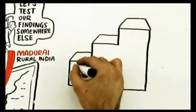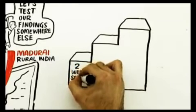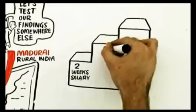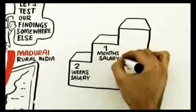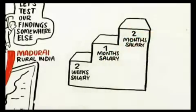They replicated the experiment in India roughly as follows. Small performance, low performance, two weeks salary. Medium performance, about a month's salary. High performance, about two months salary. So those are real good incentives.